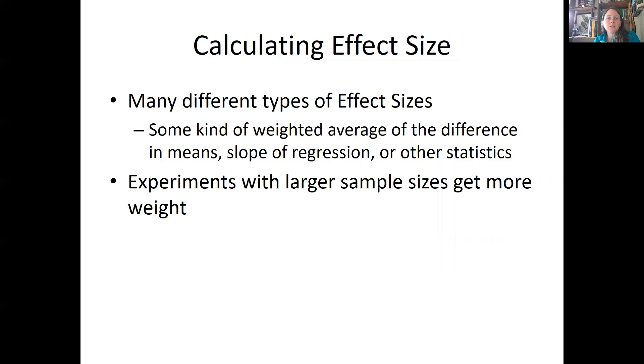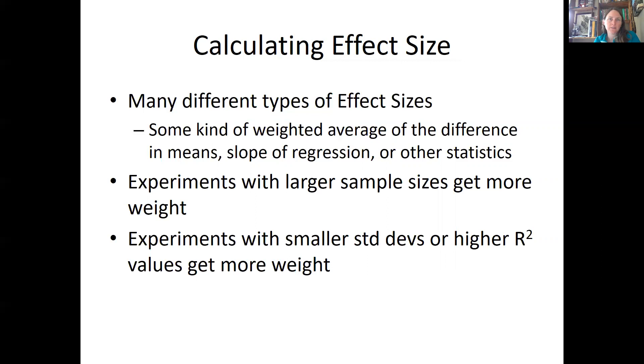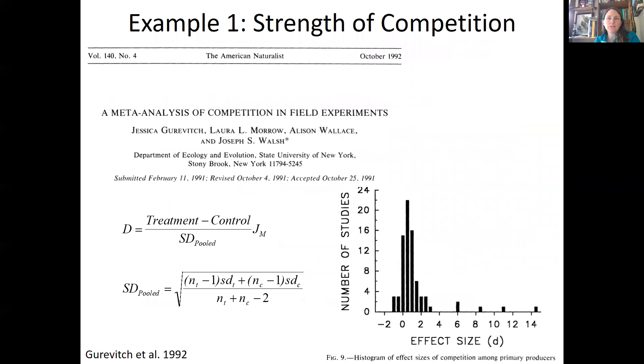So experiments with larger sample sizes get more weight. They have more statistical power. So they're weighted in meta-analysis and carry more weight. Experiments with smaller standard deviations or higher r squared values also get more weight. They're more constrained, they're less noisy. And then you test the null hypothesis. In this case, the null hypothesis is that the effect size is zero. Now it could be not zero. It could be a positive effect or it could be a negative effect. And those would be your alternative hypotheses.